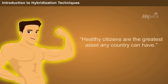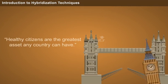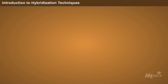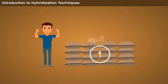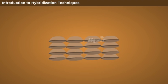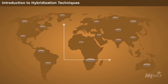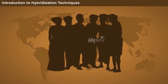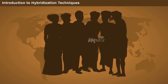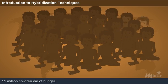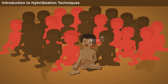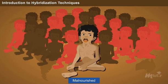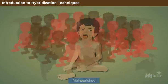Healthy citizens are the greatest asset any country can have — as stated by the late British Prime Minister Winston Churchill. For maintaining good health, we require food, which ranks first among the basic necessities of life. Although food is being produced to feed every individual, the demand keeps increasing. Millions of the global population do not get sufficient food to satisfy their hunger, and annually about 11 million children under 5 years die of hunger or hunger-related problems.